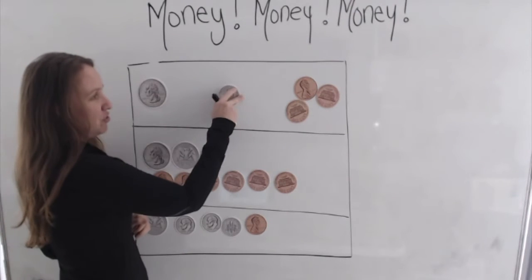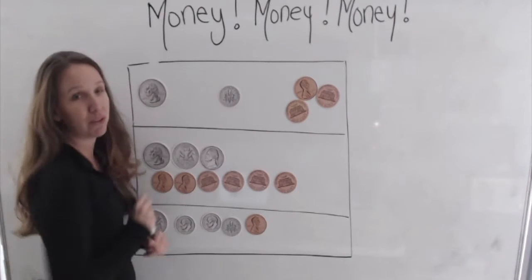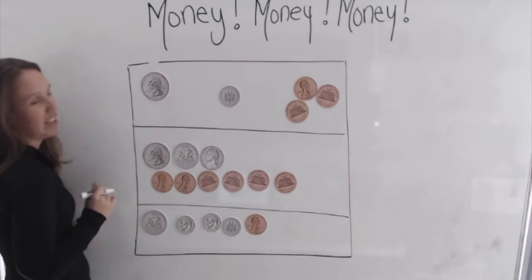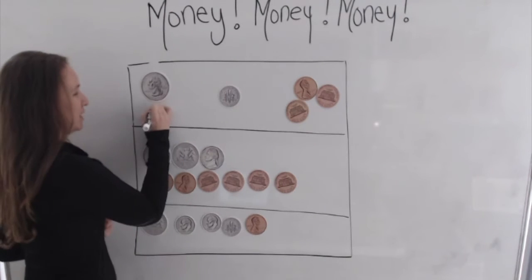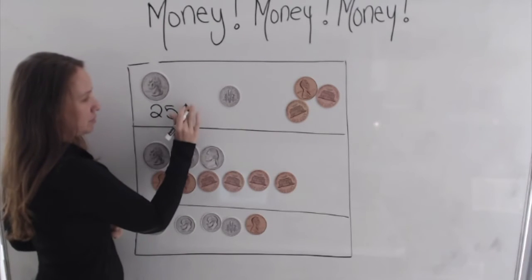Now if you remember, each of these coins have two sides. The dime can be flipped around, but it's worth the same value no matter what side we work on. So how much was a quarter worth? That's right, 25 cents.